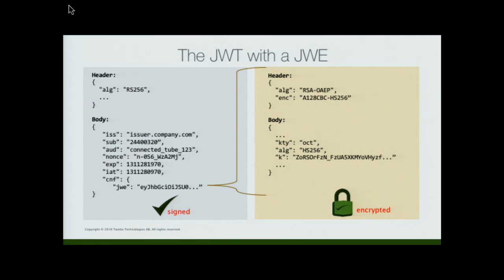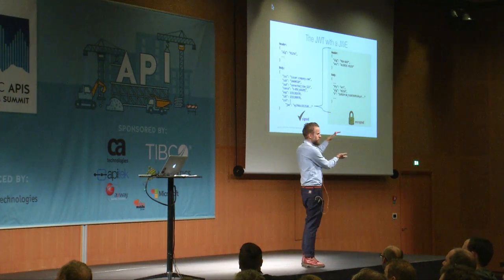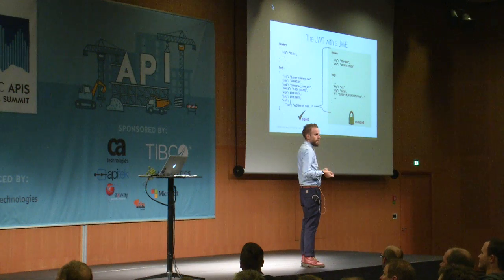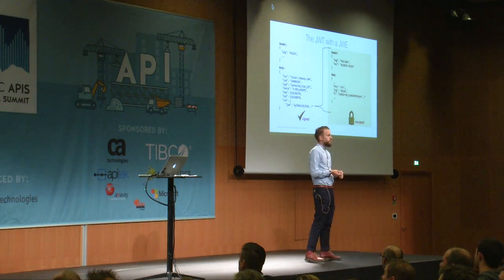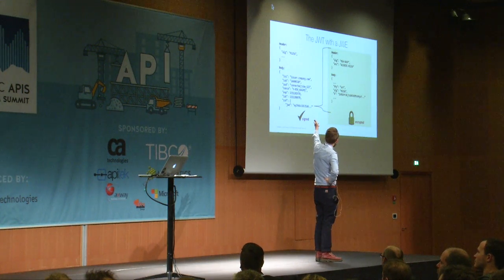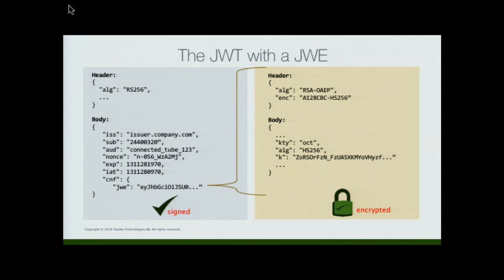So it actually sends the key back in the access token in plain view to pick up. It looks like this: to the left, you have a JWT — a regular JWT. They're kind of two JSON documents put together, usually signed at the bottom. Let's assume it could be encrypted, but it's not in this example. It says: issued by issuer.company (that's the OAuth server probably), for the user something, meant for connected-to-1-2-3. It includes a nonce — meaning not more than once — so the receiver should record it and ignore any future request with the same nonce. It only accepts this JWT once. And then it says: I expire at a certain time, I'm issued at a certain time. And CNF — there's a confirmation claim in there.